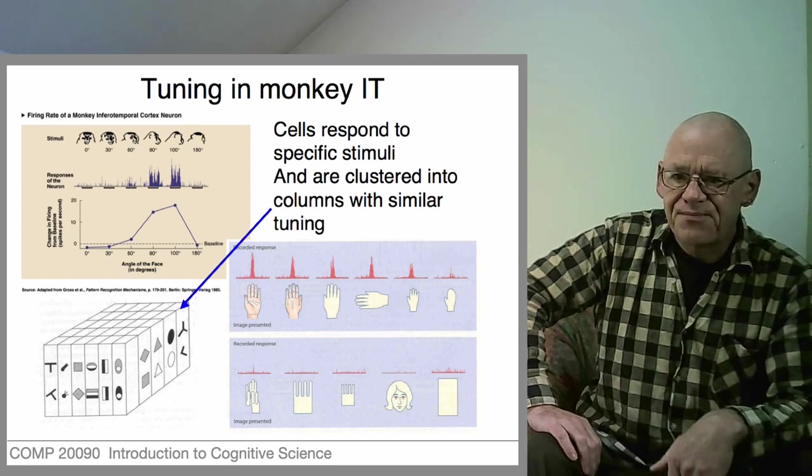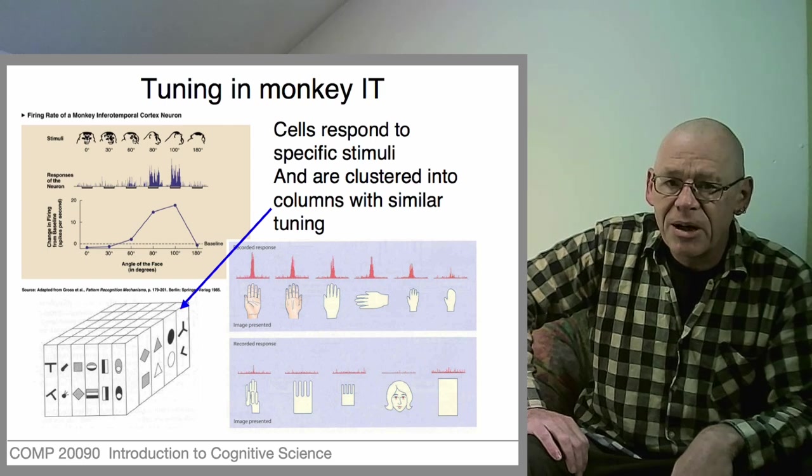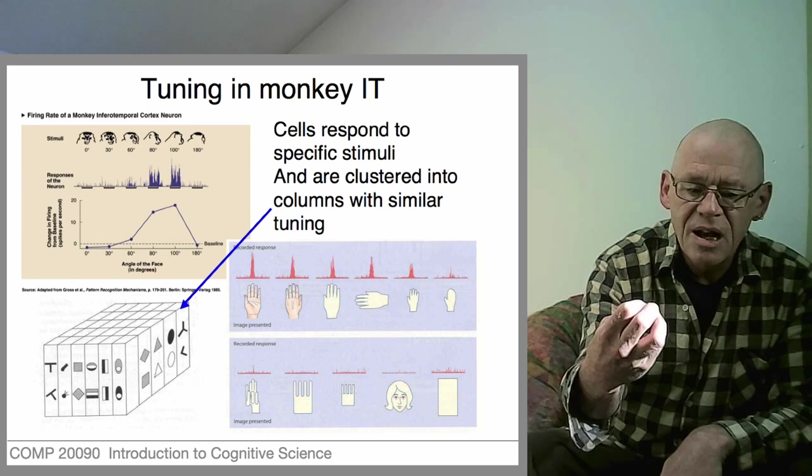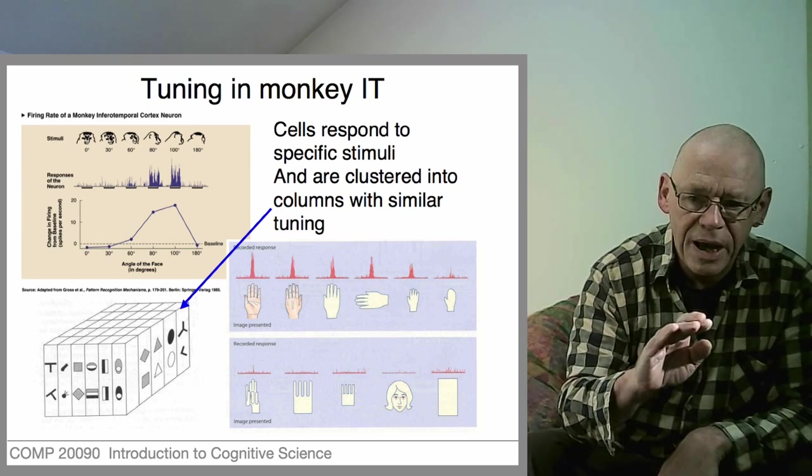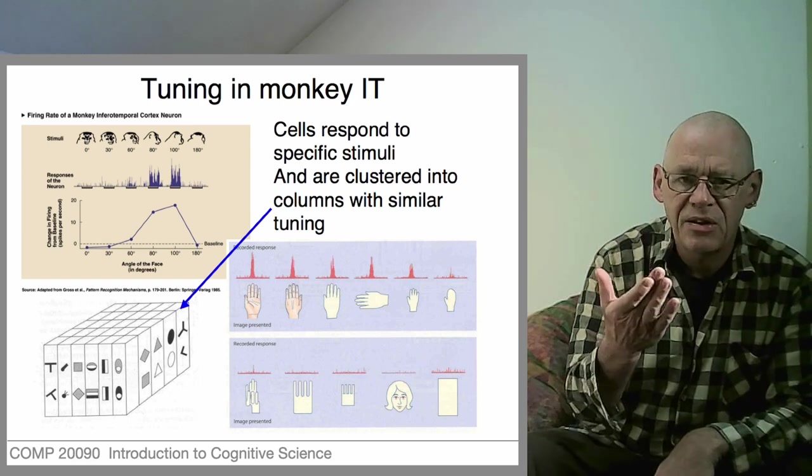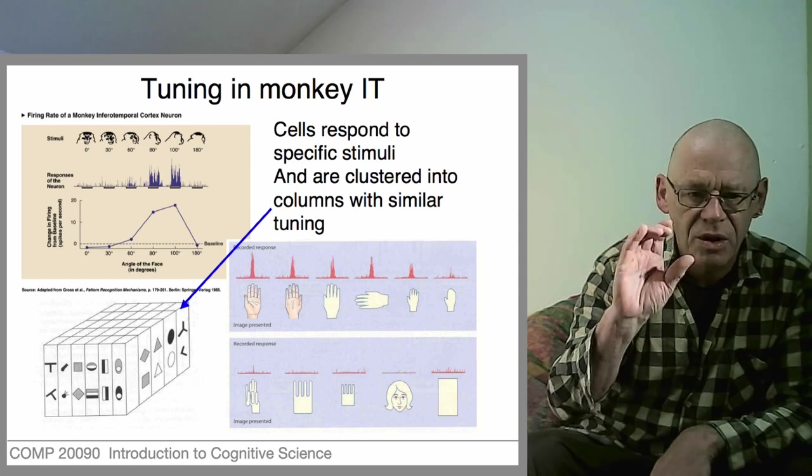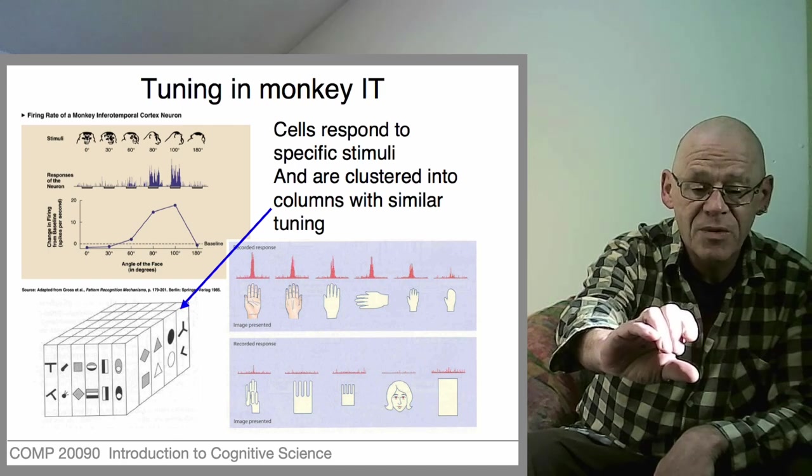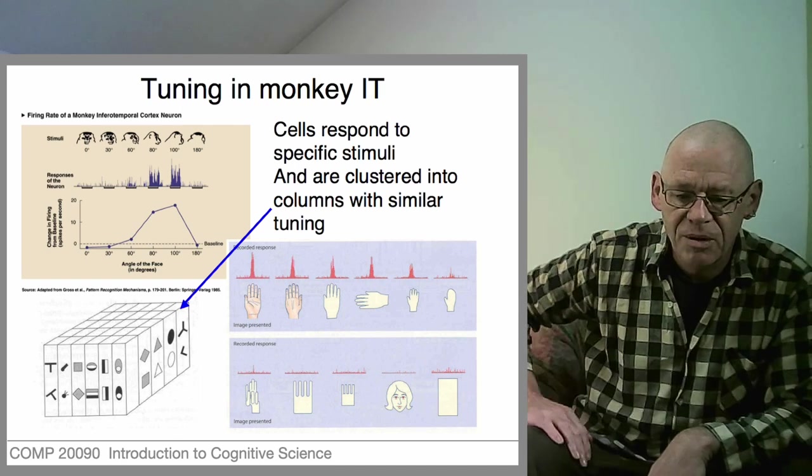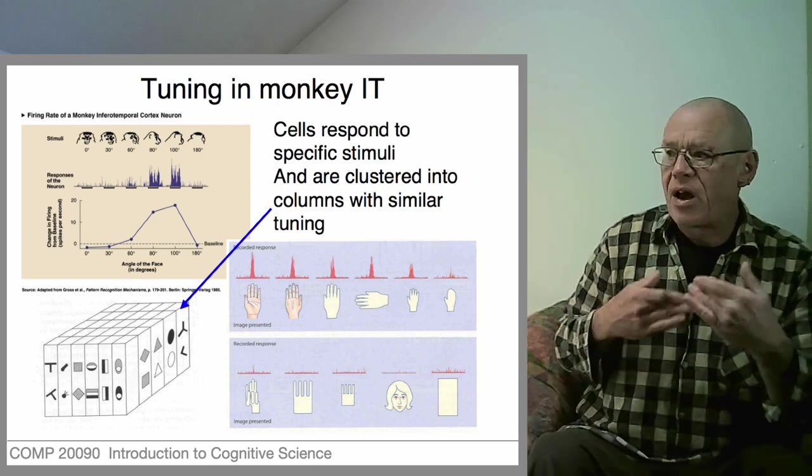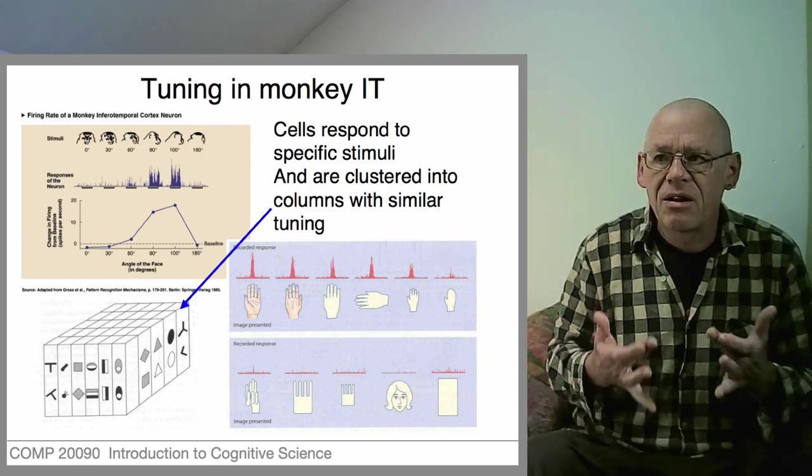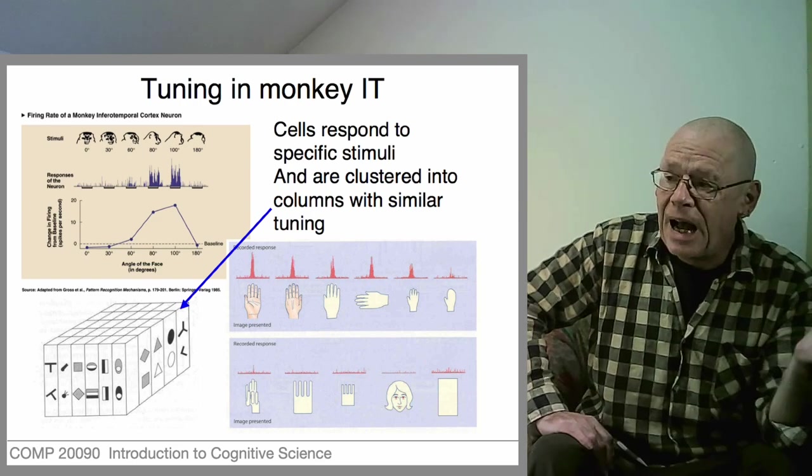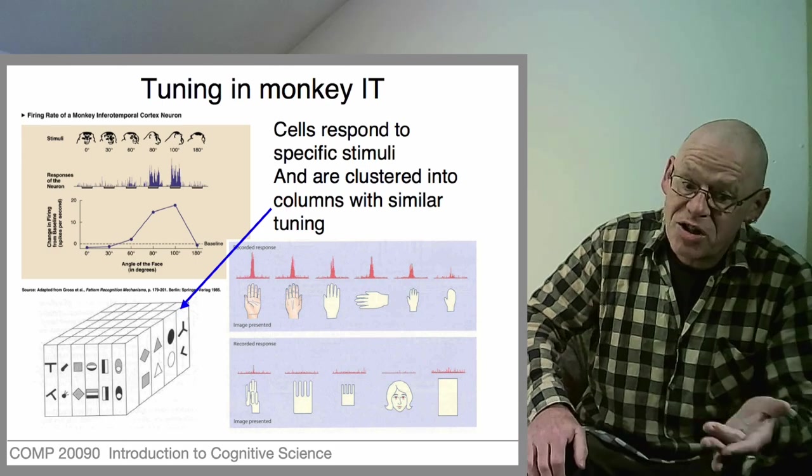It doesn't care whether the hand is oriented like this or like this, front or back—it's still a good hand. Now we show it hands at ever-decreasing size and the response goes away. So there's a preferred size to this hand. If you show a hand that looks smaller because it's further from the monkey, the response is smaller. Then we see what does a hand look like to this monkey. If we replace it with the outline of a mitten, the response just goes away. That's not a hand for this cell.